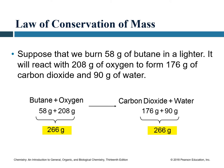For example, if 58 grams of butane gas reacts with 208 grams of oxygen (total 266 grams of reactants), it produces 176 grams of carbon dioxide and 90 grams of water — also totaling 266 grams of products. The total amount of reactants always equals the total amount of products. This should always hold true in any chemical or physical reaction.